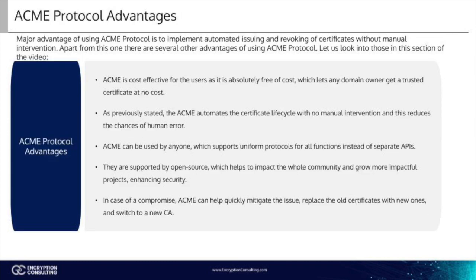A major advantage of using ACME Protocol is to implement automated issuing and revoking of certificates without manual intervention. Apart from this, there are several other advantages. ACME is cost effective and absolutely free of cost, which lets any domain user get a trusted certificate at no cost. ACME automates the certificate lifecycle with no manual intervention, reducing the chances of human error. ACME can be used by anyone, supporting uniform protocols for all functions instead of separate APIs. They are supported by open source, which helps impact the whole community and grow more impactful projects, enhancing security. And in case of compromise, ACME can help quickly mitigate the issue, replace old certificates with new ones, and switch to a new CA.